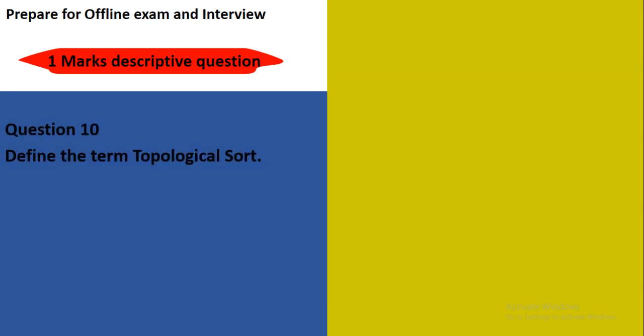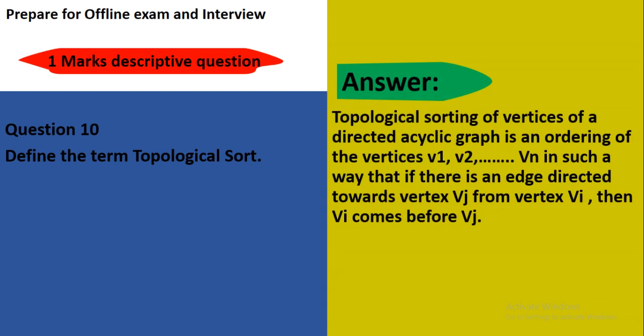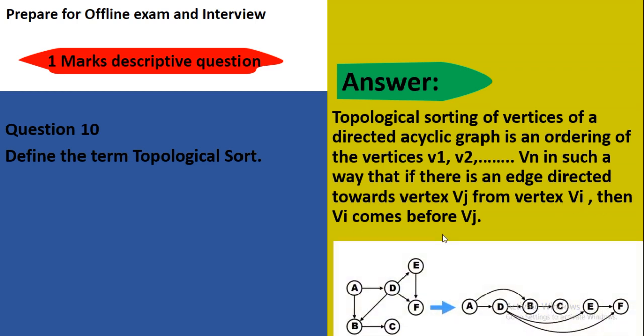Define the term topological sort. What is meant by topological sort? Topological sorting of vertices of a directed acyclic graph is an ordering of the vertices V1, V2 through Vn in such a way that if there is an edge directed towards vertex Vj from vertex Vi, then Vi comes before Vj. Here is one graph given and the topological assertion of this graph is here.